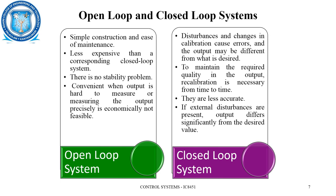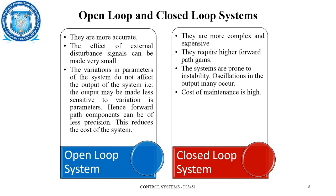Open loop systems are also convenient when output is hard to measure or measuring the output precisely is economically not feasible. In closed loop systems, recalibration is necessary from time to time to maintain required output quality, and they are less accurate. If external disturbances are present, output may differ significantly from the desired value, even though some suppression of disturbances is provided. Open loop systems are more accurate, the effect of external disturbance signals can be made very small, and variations in system parameters do not significantly affect the output. Thus, forward path components can be of less precision, reducing total system cost.